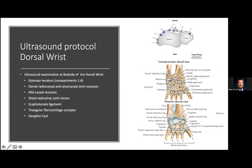Remember to always look at your dorsal radiocarpal and ulnocarpal joints, the mid carpal row — evaluating to make sure there are no fusions and no cysts — and the DRUJ is important to evaluate too. As far as ligaments and specific structures, your TFCC is quite a large complex, so make sure you're capturing some of that. The scapholunate ligament, which is one of your primary carpal stabilizers, you'll want to evaluate as well. If you see a ganglion cyst, there are additional evaluations you can do with ultrasound to further help with that diagnosis, given the large differential for a wrist mass.